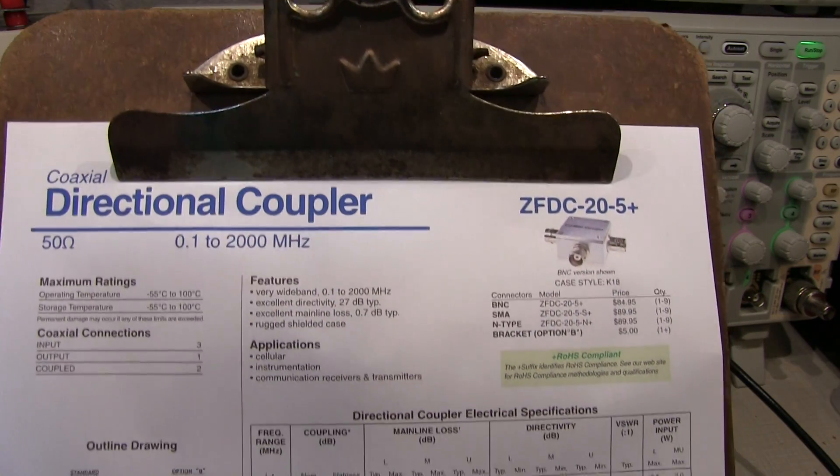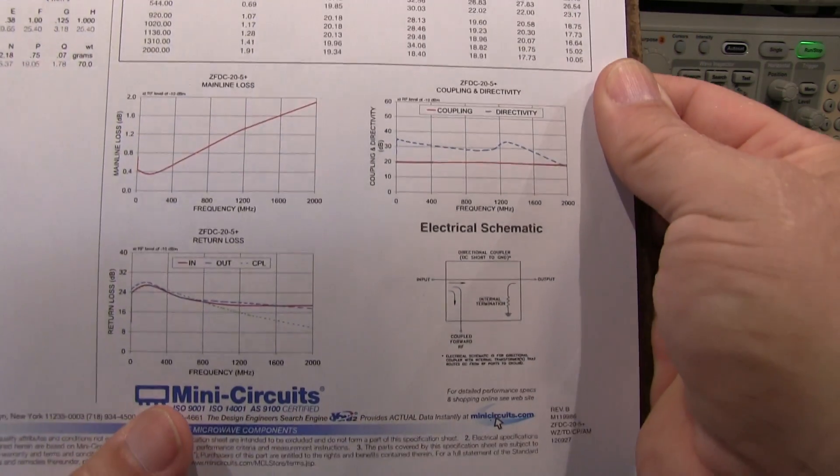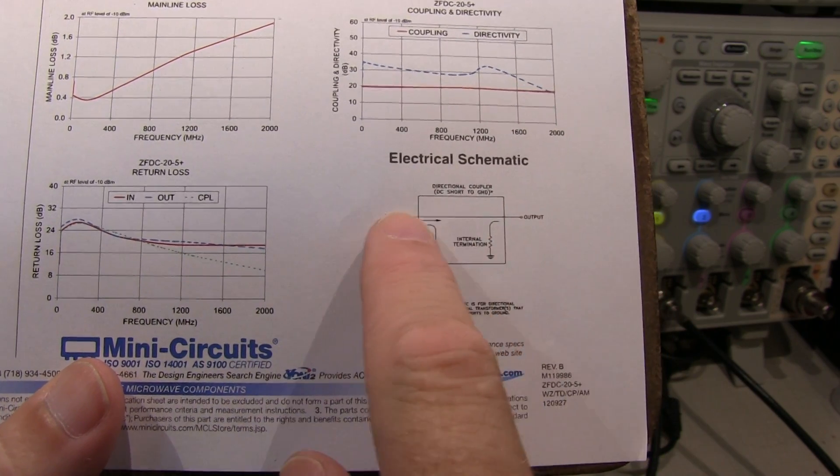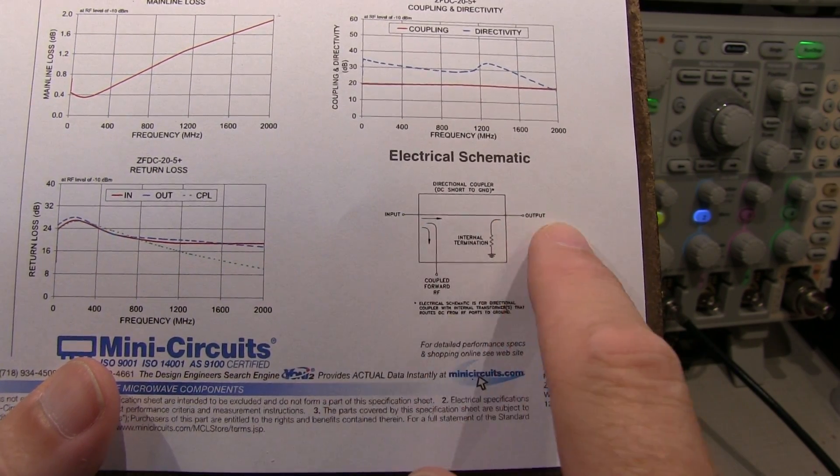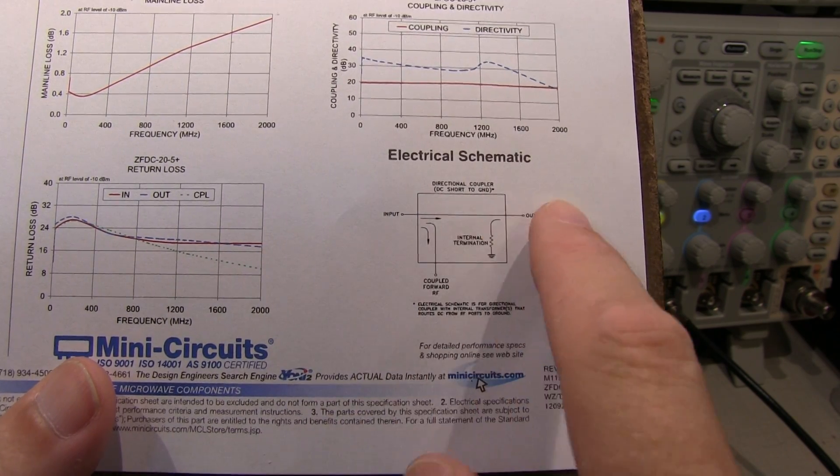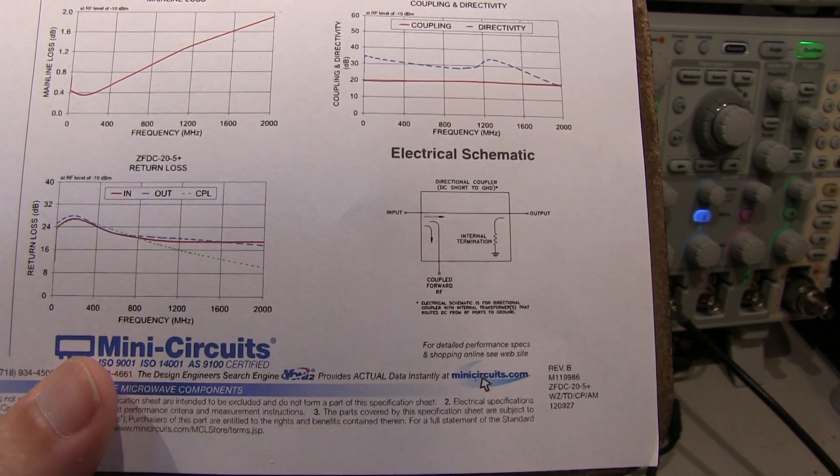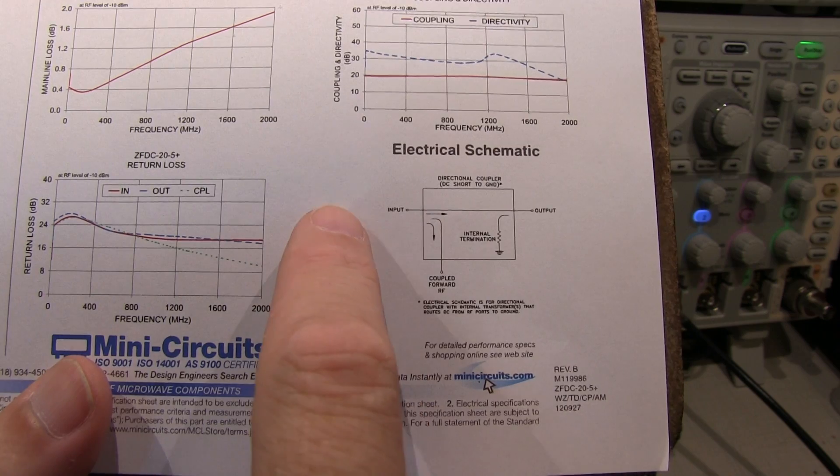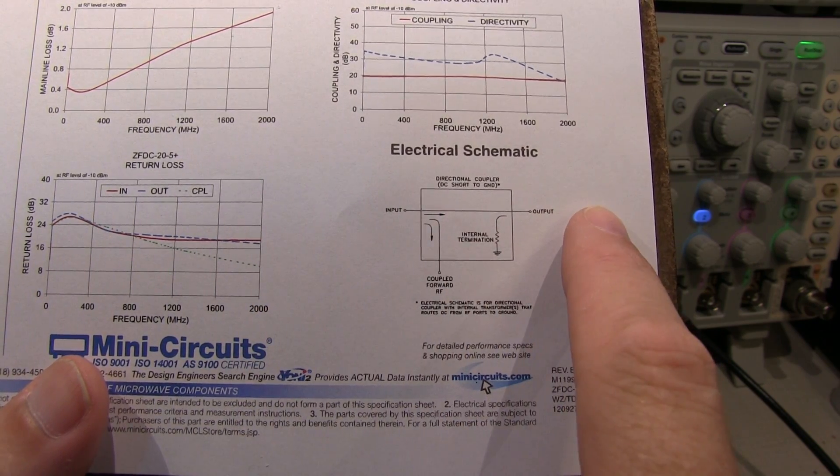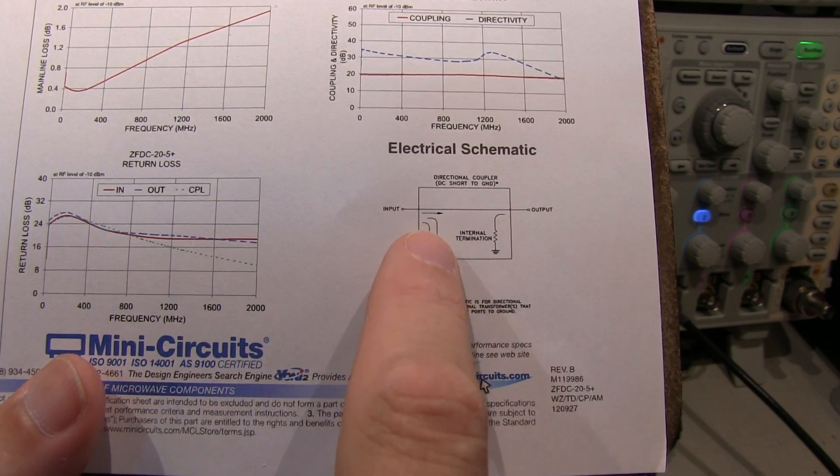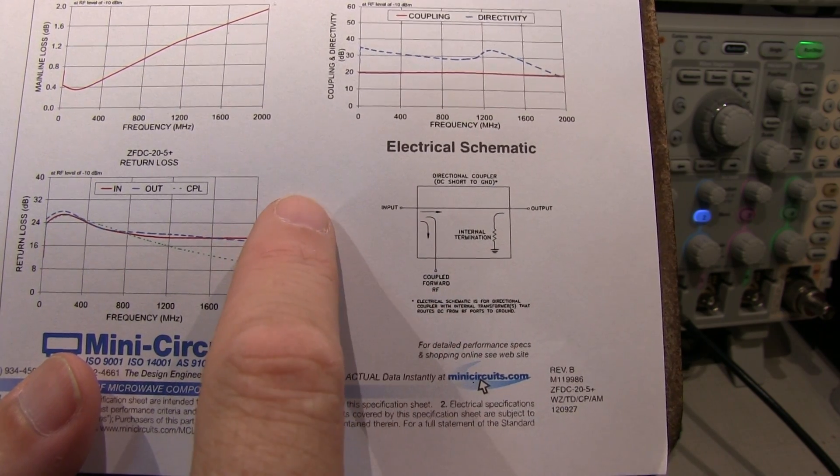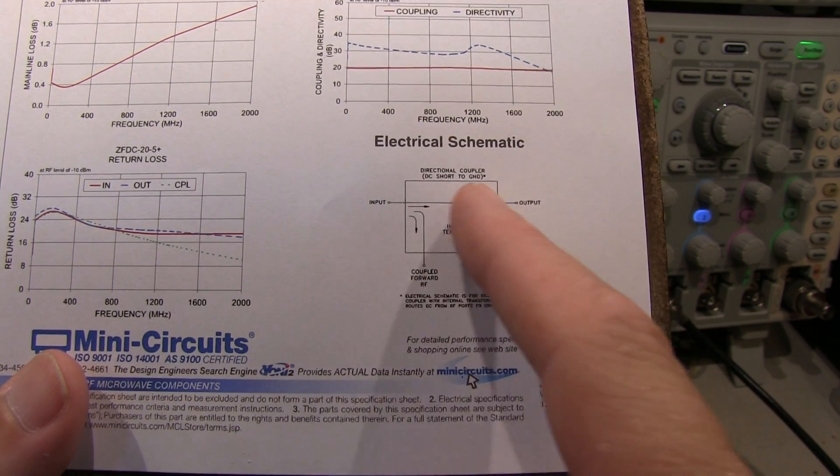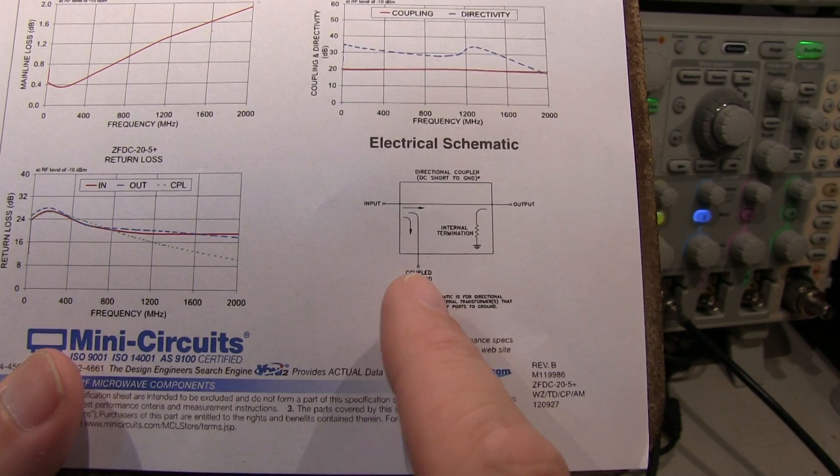A directional coupler is kind of an interesting RF device. Really, internally, what it consists of is a main transmission line path called the main line, and it's intended to have very low loss, typically less than a dB or so, but it depends on frequency, of course. And then there's also a coupled line. The idea is that when you have power traveling from the input to the output, a portion of that is coupled to the coupled line. But it's only for signals that are traveling in that direction. For signals traveling in the other direction, there's very little coupling into that coupled line.